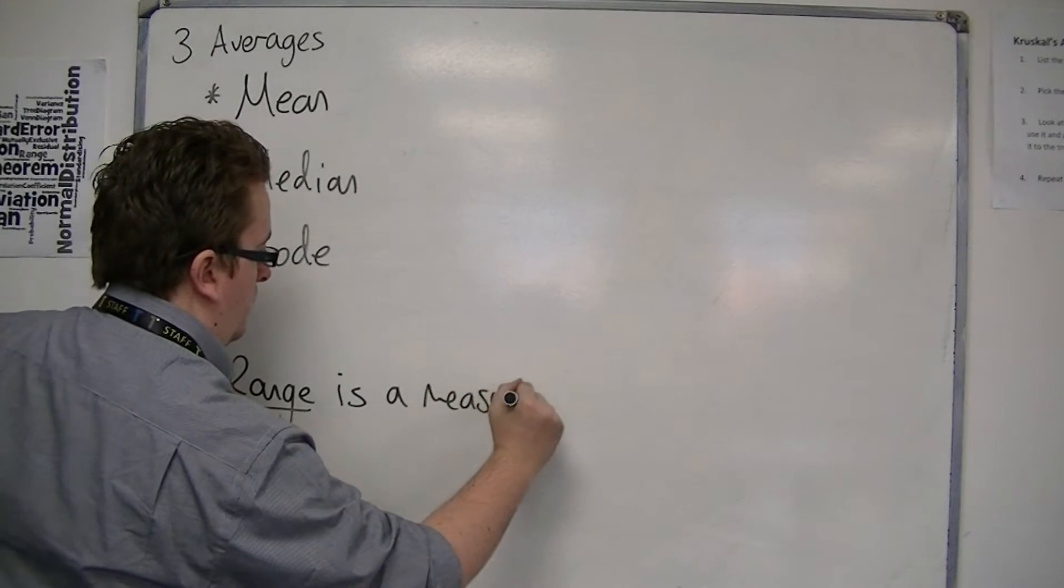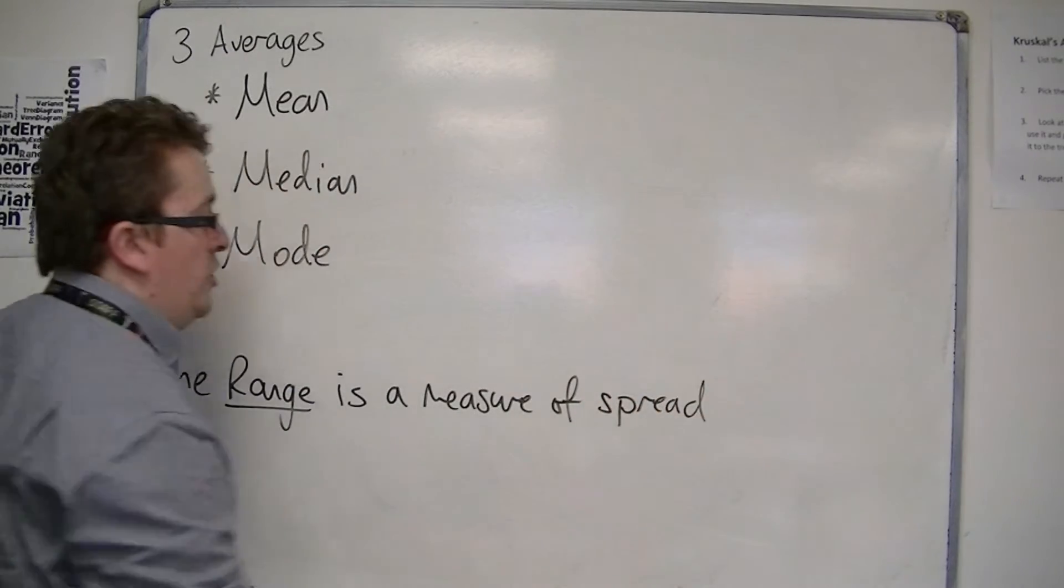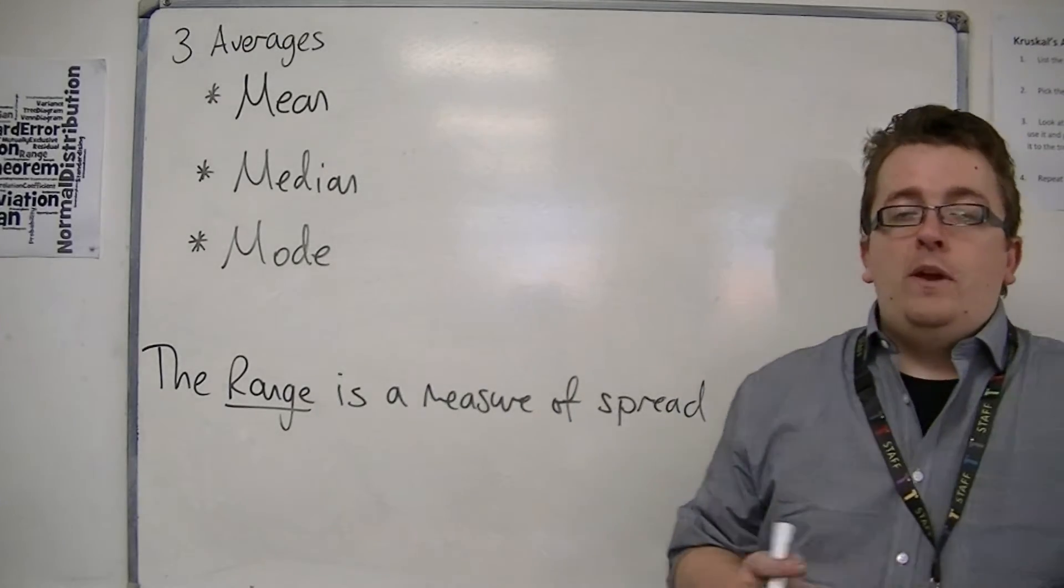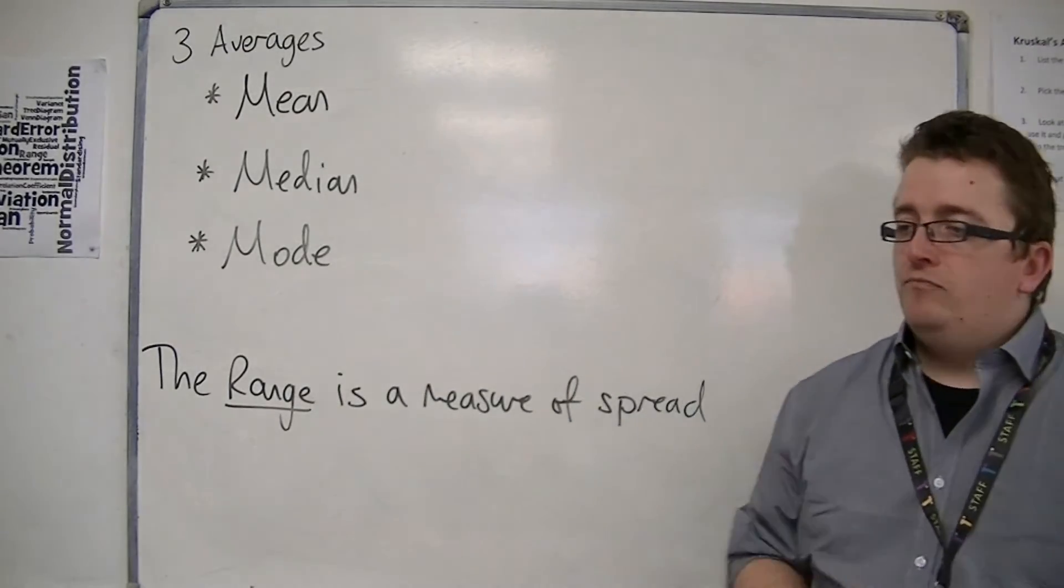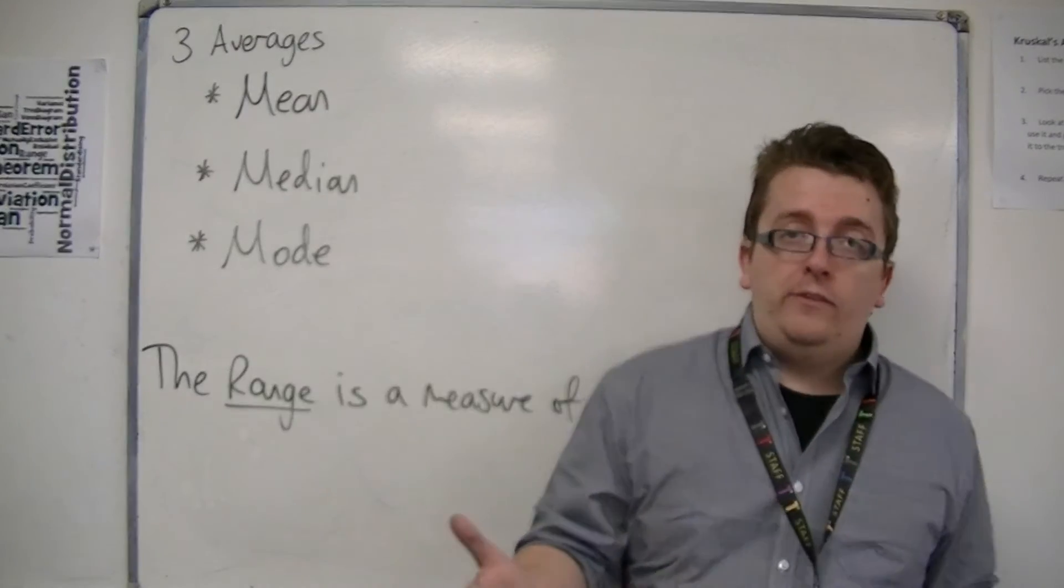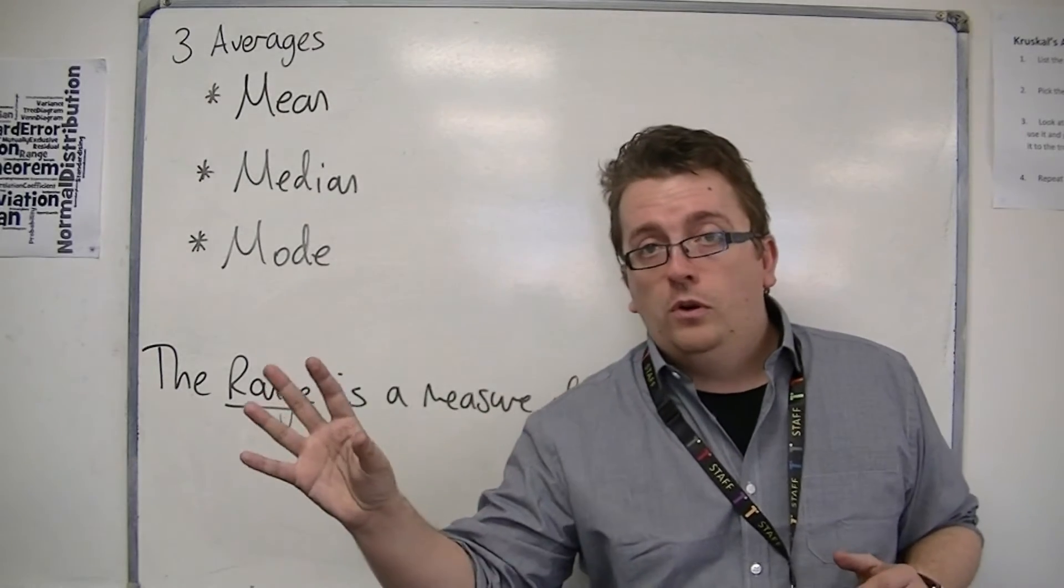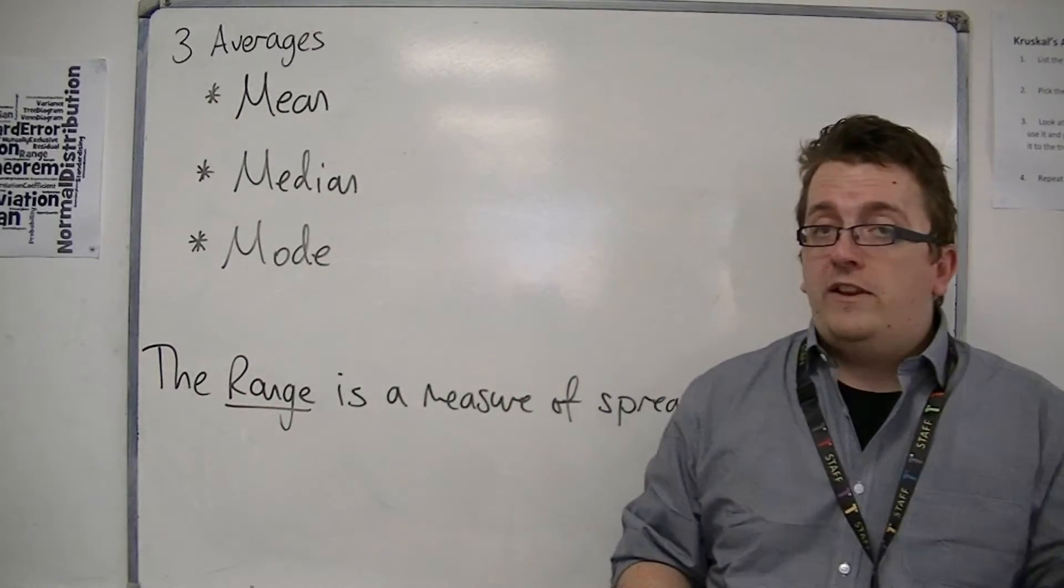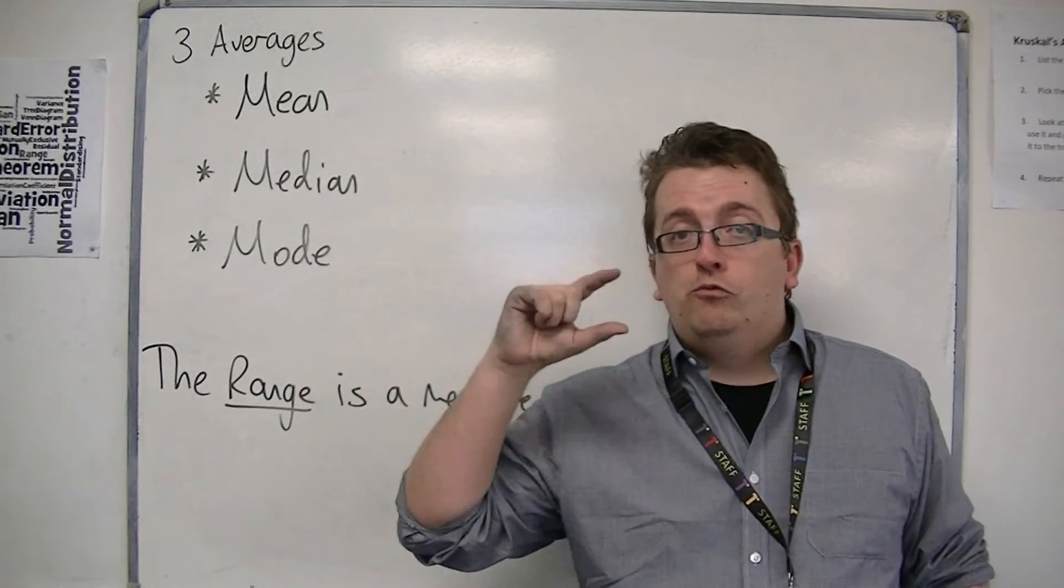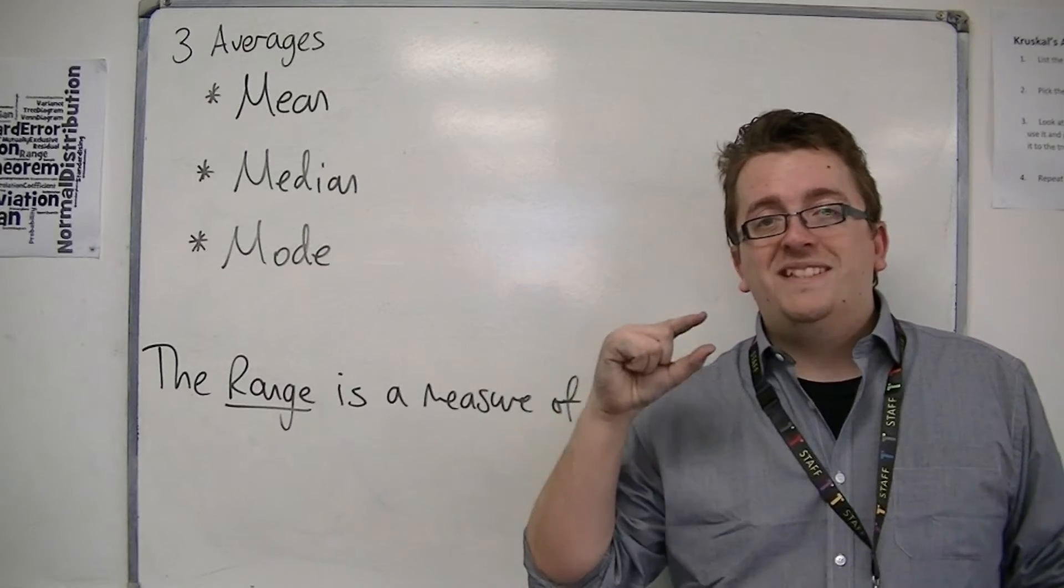Which means that the range tells you how spread out the data is. So if you had two people that are preparing for a race, and you took all of the race scores for one person, and you took all of the race scores for the other, and the first person's range is smaller, that would mean that he is more consistent.